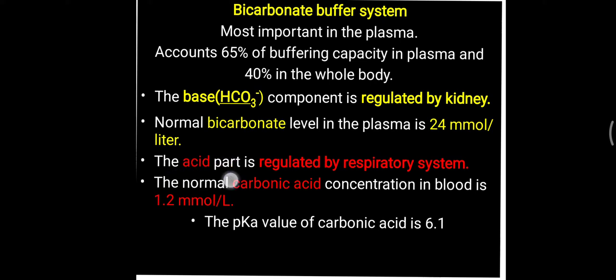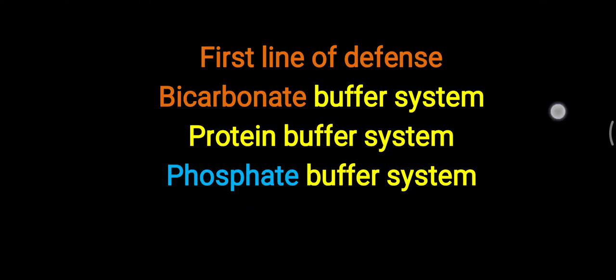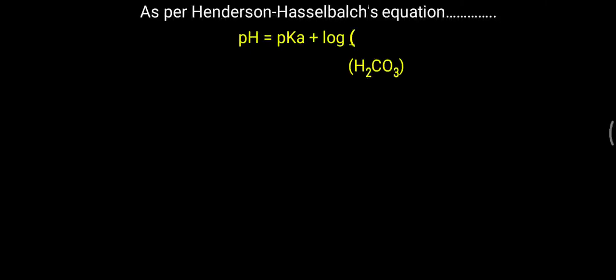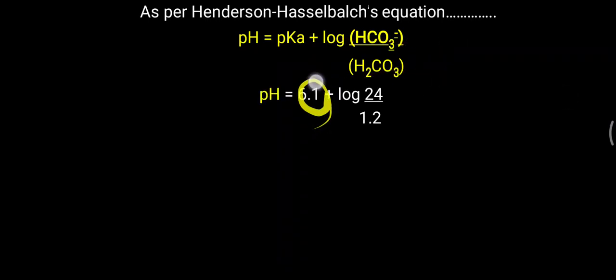The acid part — carbonic acid — is regulated by the respiratory system, and its normal concentration is approximately 1.2 mmol/L. These two values are important for understanding the bicarbonate buffer system. The pKa value of carbonic acid is 6.1. Applying the Henderson-Hasselbalch equation: pH = pKa + log(base/acid), where base is bicarbonate ion and acid is carbonic acid, and pKa is 6.1.